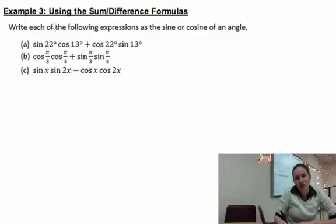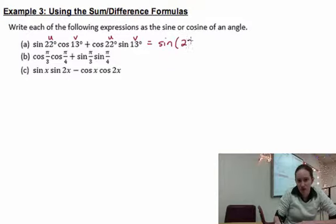So to do that, we would realize here that this is u and v for our angles in one of our formulas, and then because we have sine, cosine, and then cosine, sine, that matches up best with sine. And since it's sine, if this is a plus, then inside of our parentheses we will have a plus.